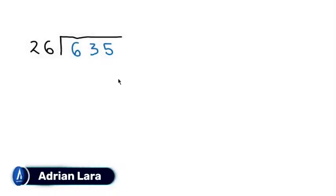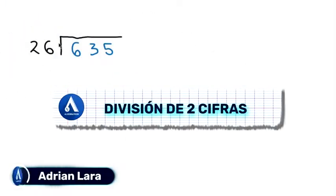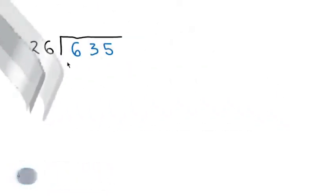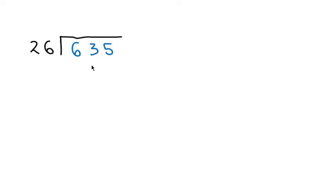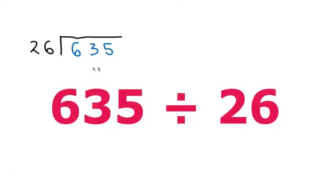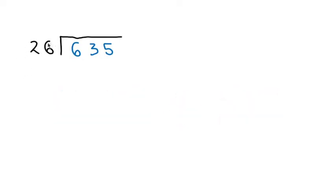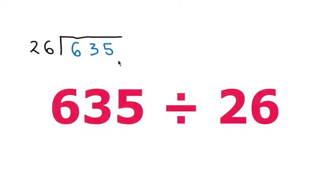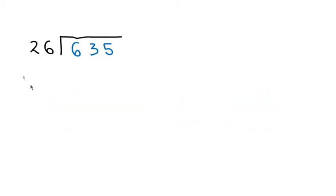Welcome to this new video where we will be talking about how to divide by two digits. If we have two digits in the divisor and three digits in the dividend, this video is for you. If you really want to learn divisions, I'm going to leave you a playlist of divisions from scratch. Let's start with this division: 635 divided by 26. This is read as 635 between 26. Many people read it backwards — 26 between 635 — and that is incorrect. You have to put the big number first, then divide by the smallest number, which is 26.